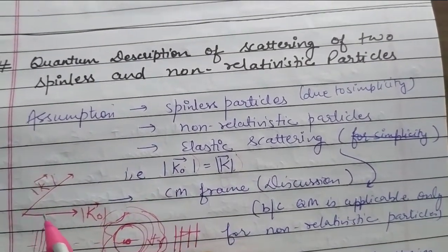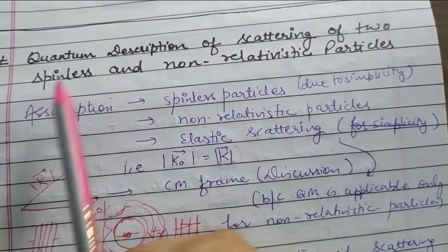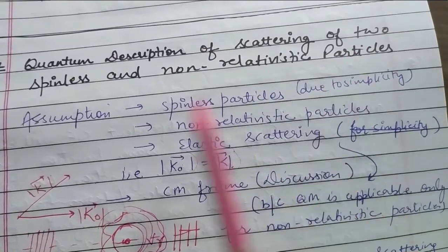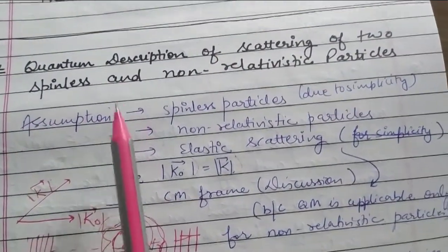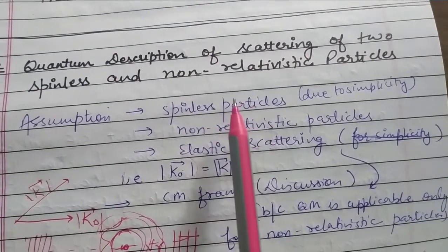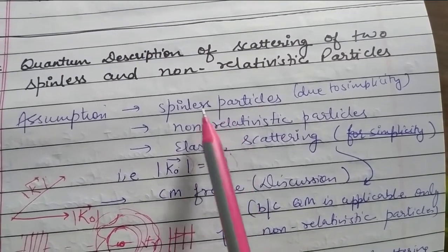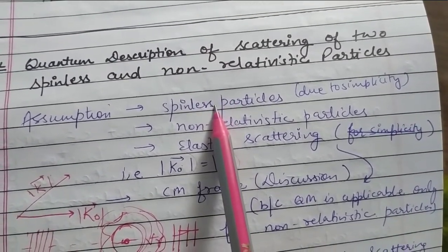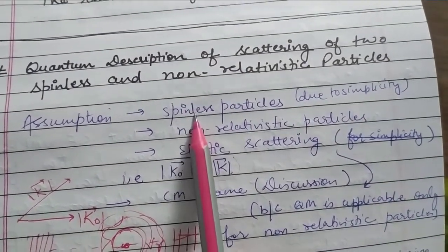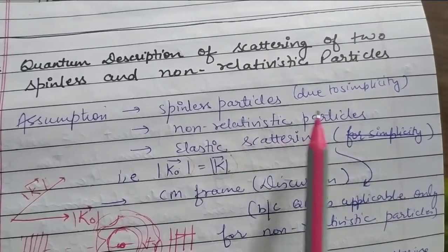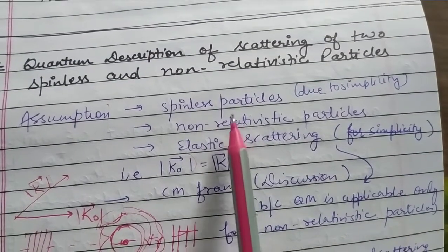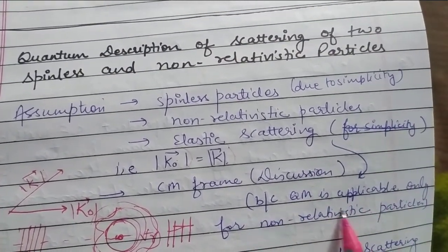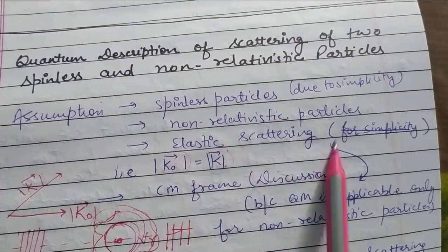Hello guys, welcome back to my channel Human Physics Tutorials. This is scattering amplitude lecture number three: quantum description of scattering of two spinless and non-relativistic particles. Before studying, we have some assumptions. Our particles are spinless because if we consider spin, the calculation will be complicated, so for simplicity we consider spinless particles. Next, particles are non-relativistic. Third, we will consider elastic scattering, because quantum mechanics is applicable only for non-relativistic particles.